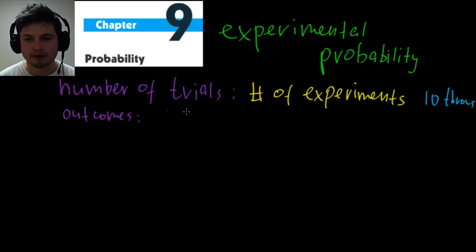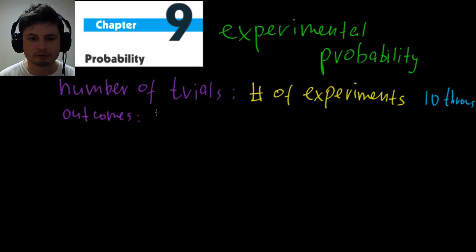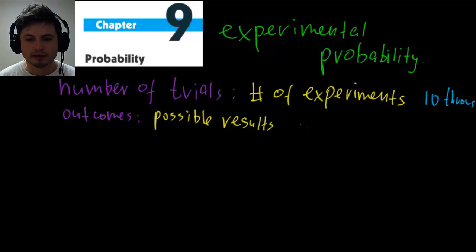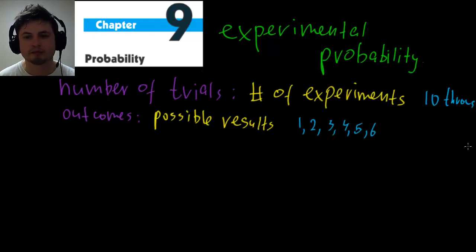The other term is 'outcomes' — the various results that are possible in the experiment. In our case the possible outcomes are one, two, three, four, five, and six, because it's a six-sided die.